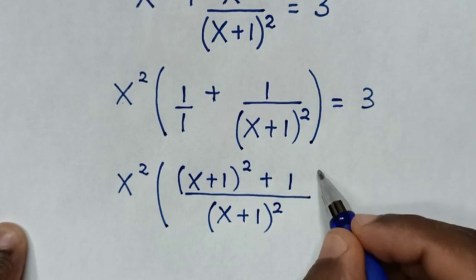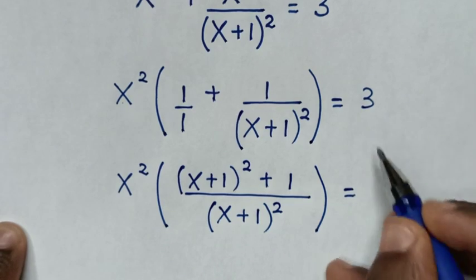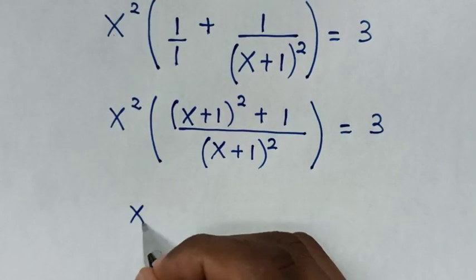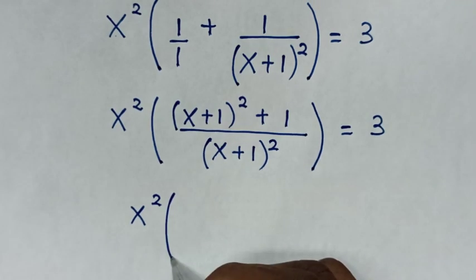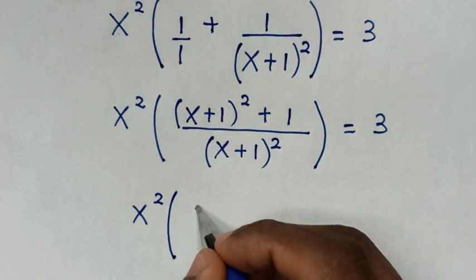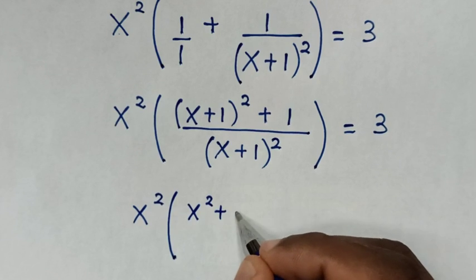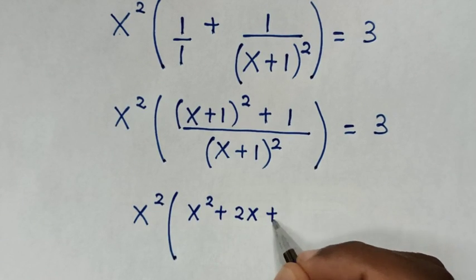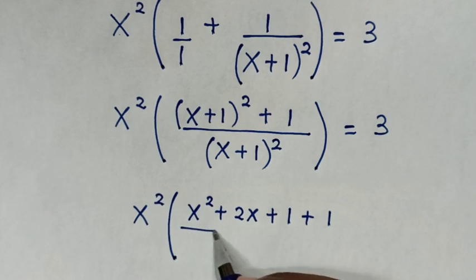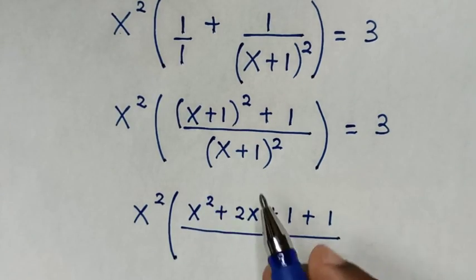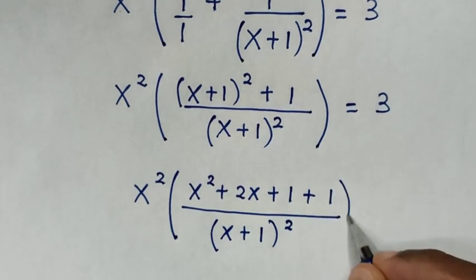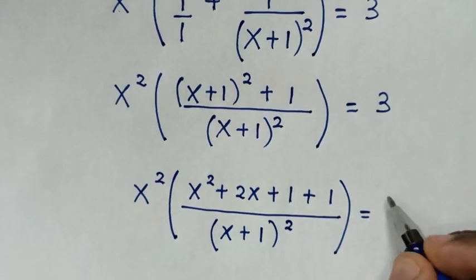So 1 times 1 is 1, then bracket is equal to 3. We expand (x plus 1) squared as x squared plus 2x plus 1, then plus 1, over (x plus 1) squared, bracket is equal to 3.